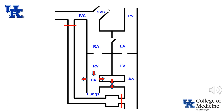The decrease in pulmonary vascular resistance has two effects. First, a decrease in pulmonary artery pressure, which further minimizes the pressure difference between the pulmonary artery and the aorta. In addition, pulmonary blood flow increases, thereby increasing left atrial pressure. This, combined with the decreased right atrial pressure, results in the left atrial pressure exceeding right atrial pressure and functional closure of the foramen ovale.